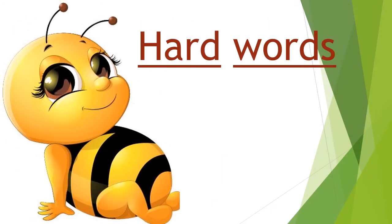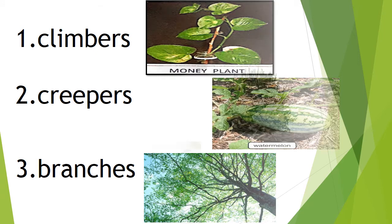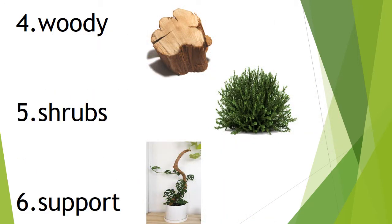Now we will revise the hard words for types of plants. Number one: climbers. Number two: creepers. Number three: branches. Number four: woody.